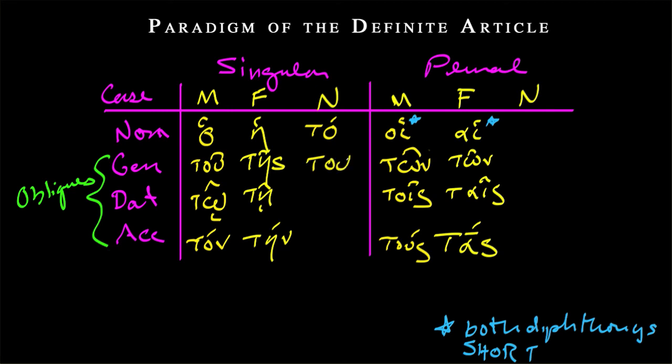But then as we move through the rest of the neuter, in the oblique cases, it looks a lot like the masculine. Tou is equal to tou, tō is equal to tō.